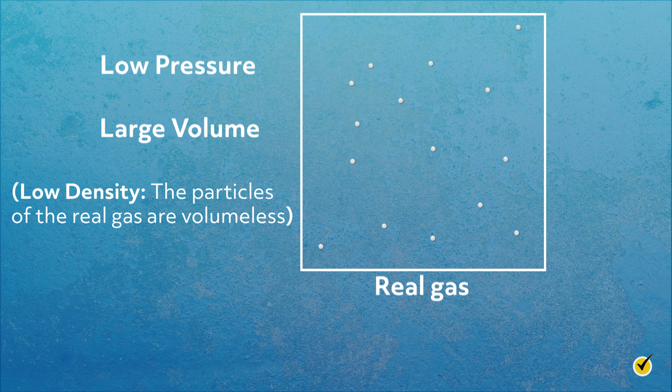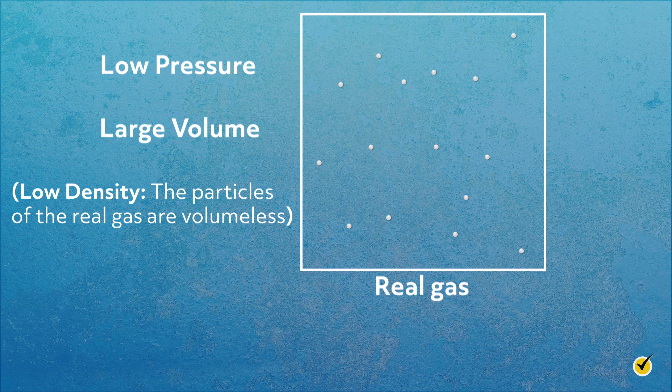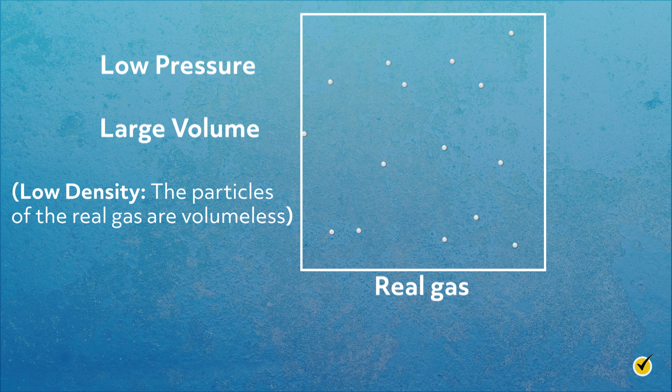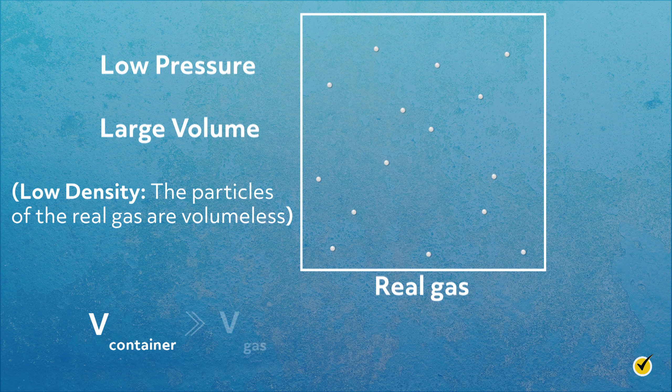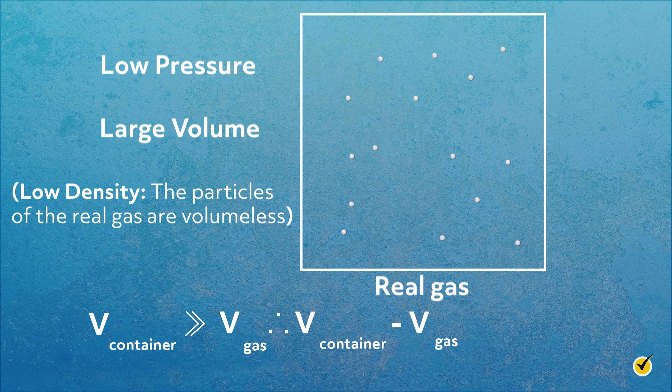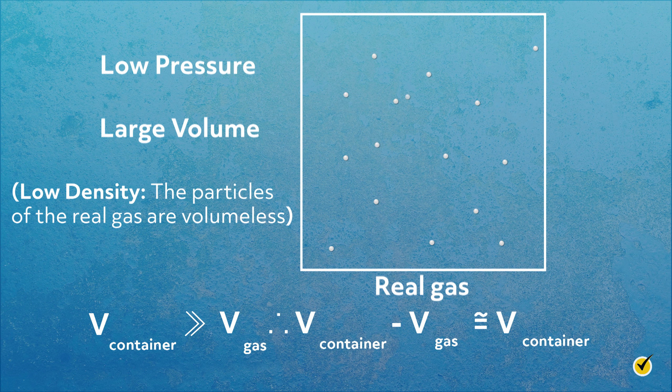...the volume of the real gas particles is negligible in comparison to the volume of the container. This means that we can assume the particles of the real gas to be volumeless, which makes them like an ideal gas. We can formally write this by saying that the volume of the container is much greater than the volume of the gas particles, so that the container volume minus the gas volume pretty much still equals the original container volume.